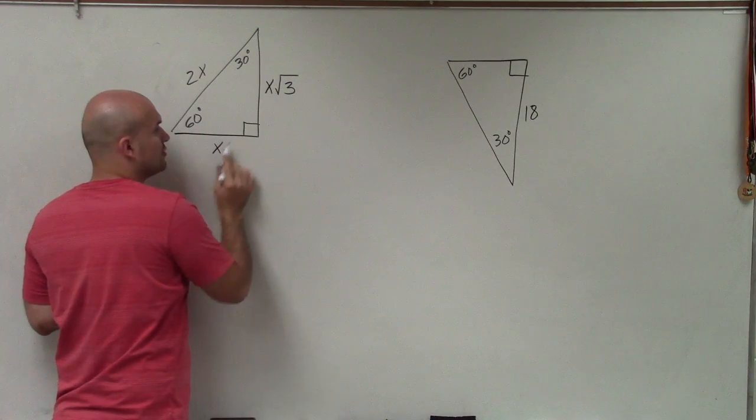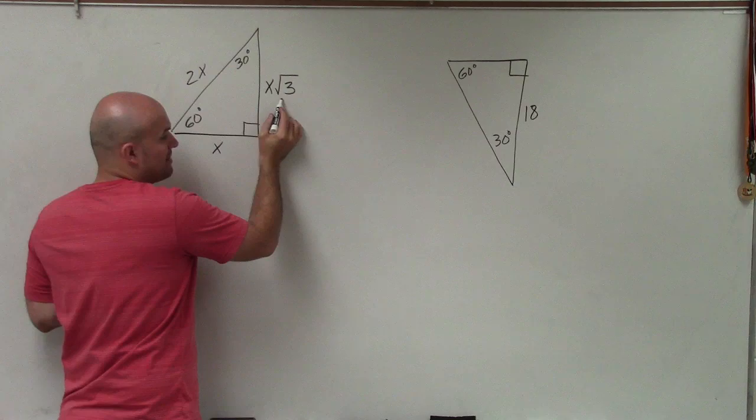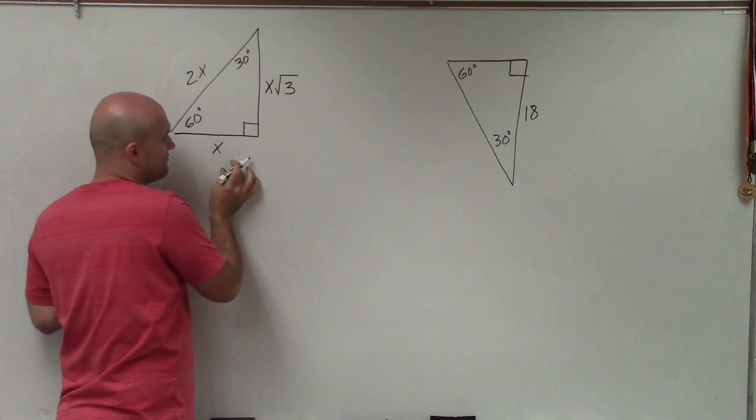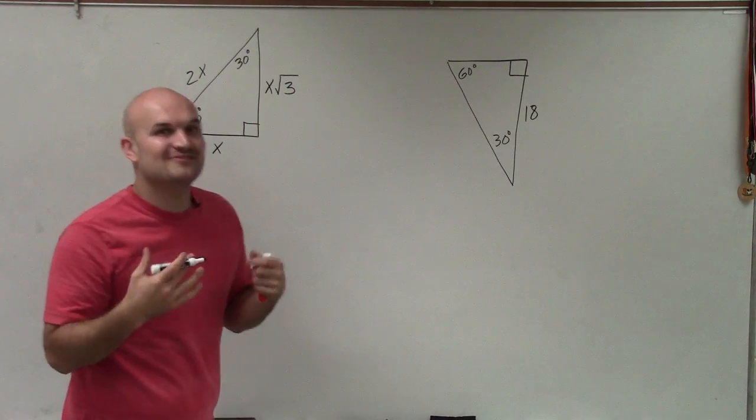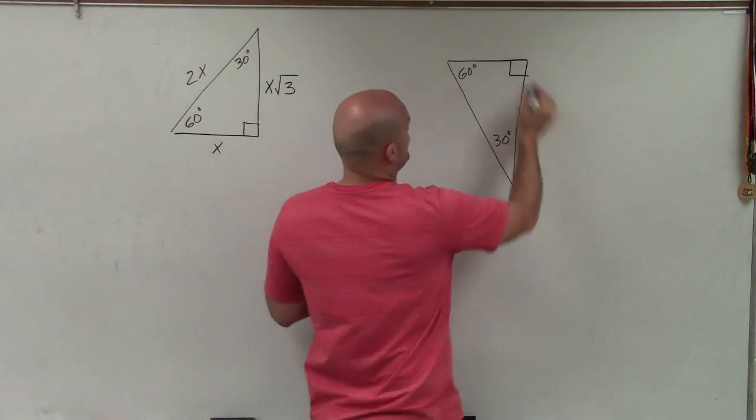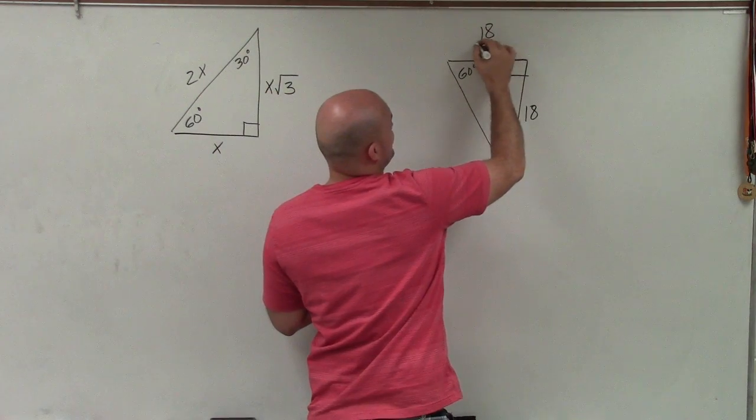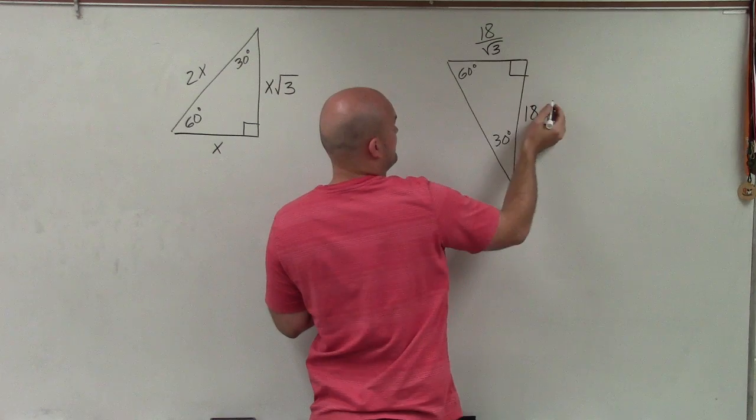So to go from the short leg to the long leg, I multiply by the square root of 3. So if I'm given the long leg and I want to find the short leg, I have to divide by the square root of 3. So therefore, this is simply going to be 18 divided by the square root of 3.